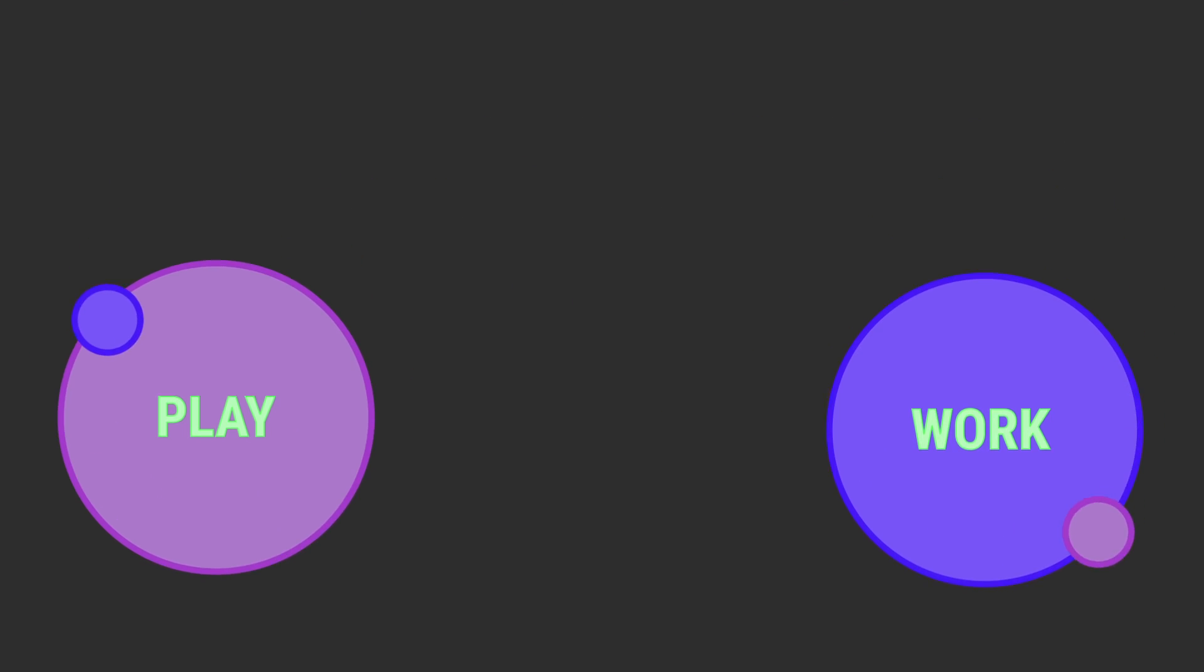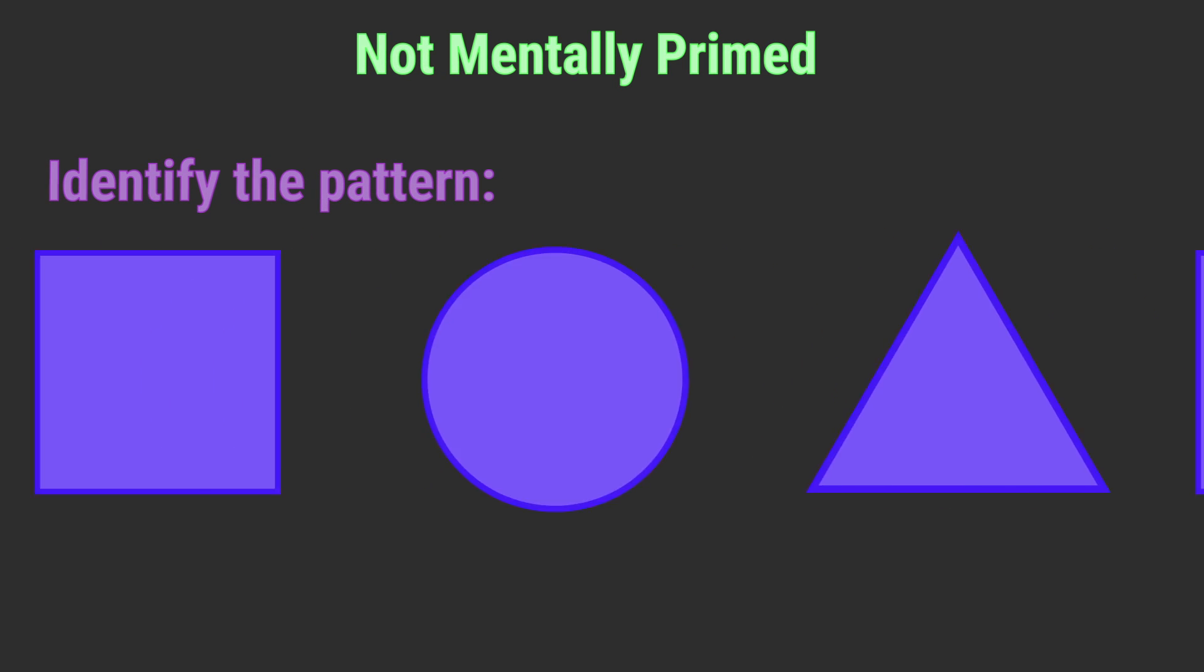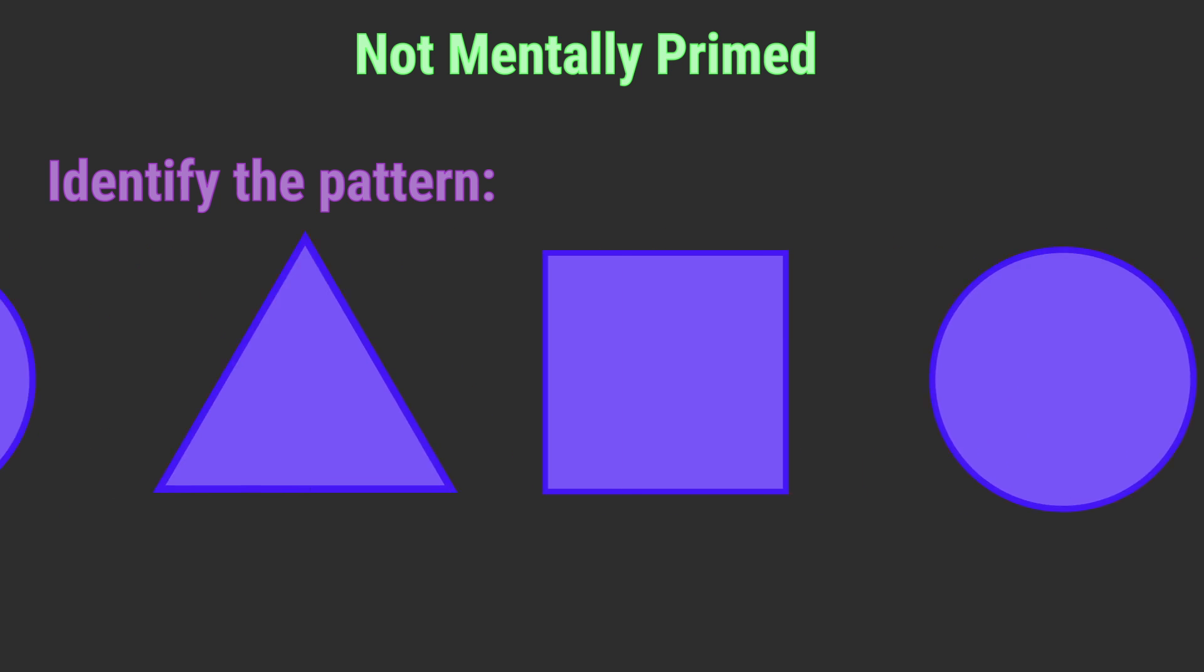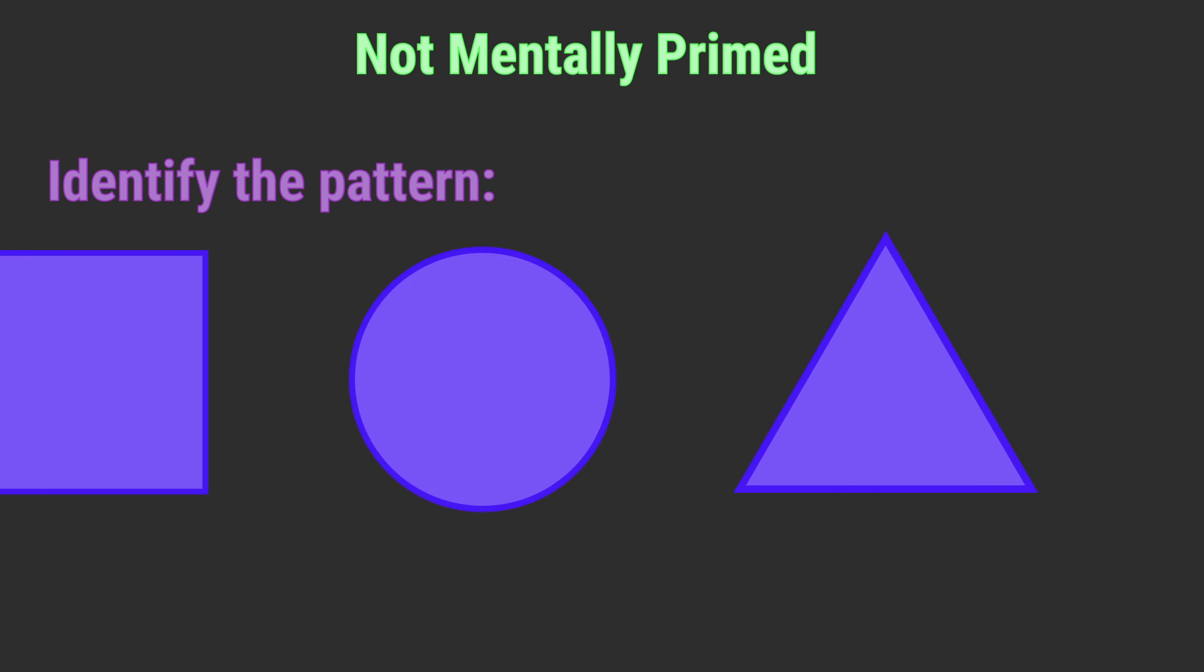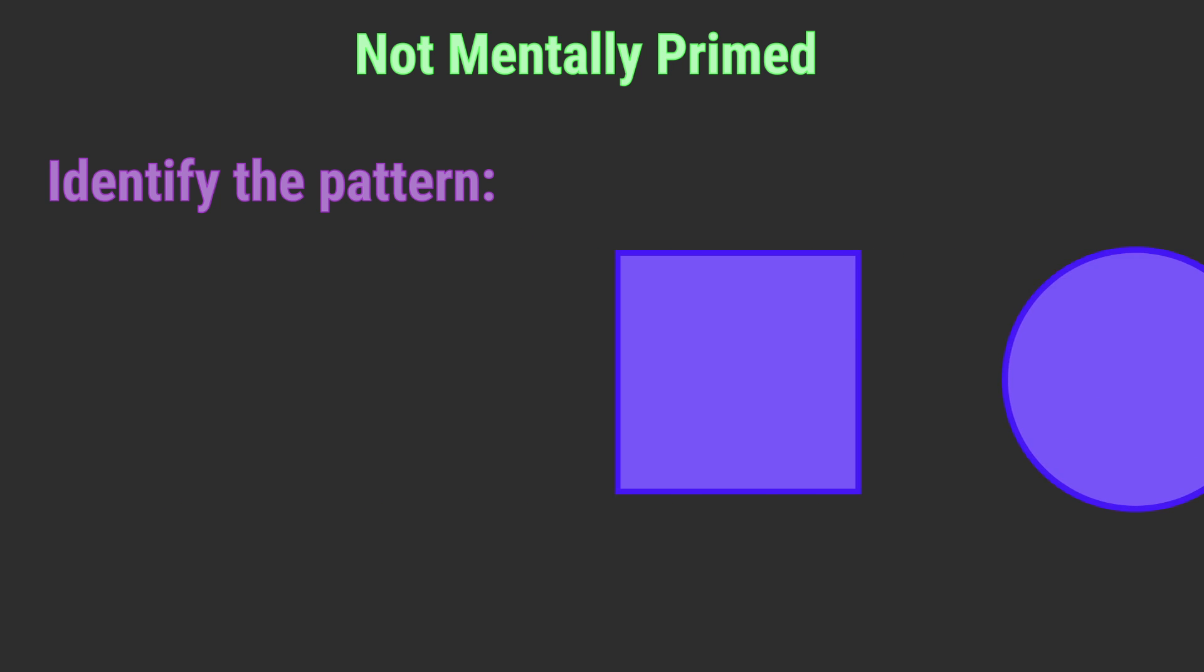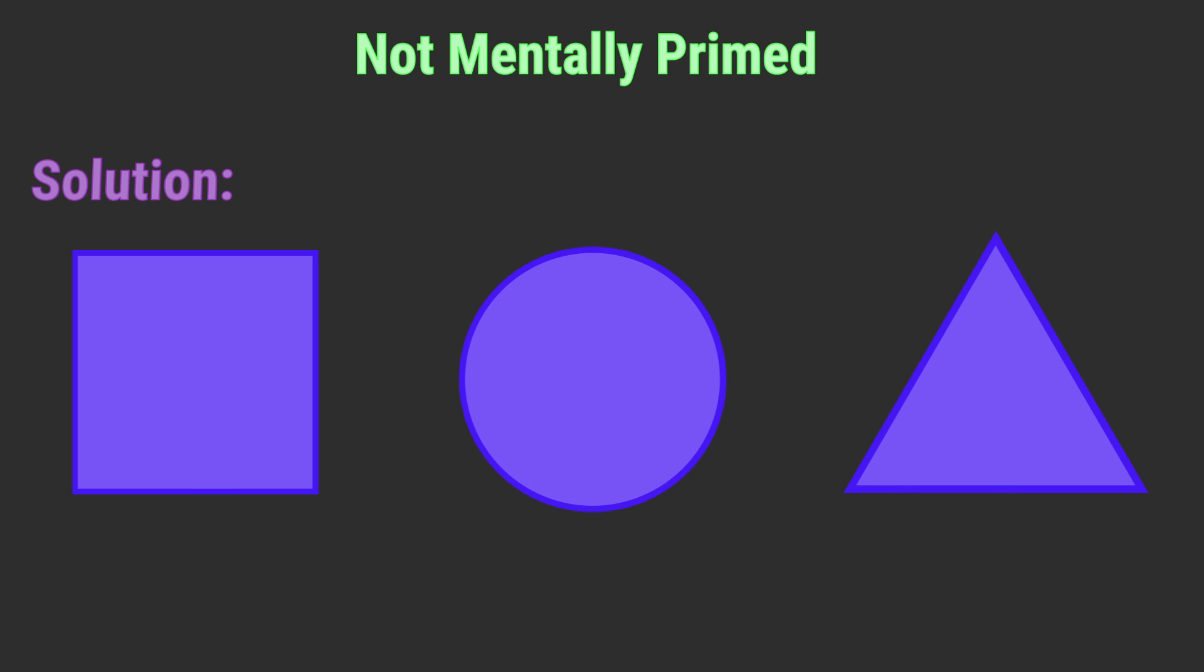Problem number three is not being mentally primed. The average person needs to see something a few times before it really sticks in their head. Most students come to the lectures unprepared and therefore unprimed. Since they have no prior knowledge of the topic, the lecture is the first time they're hearing about it. Naturally you're not going to learn very much if it's your first time hearing about a difficult topic.